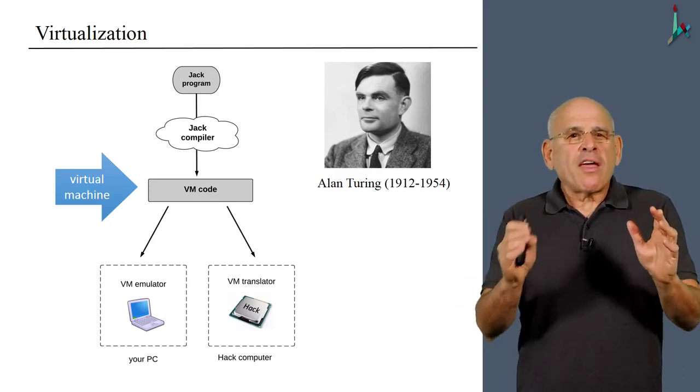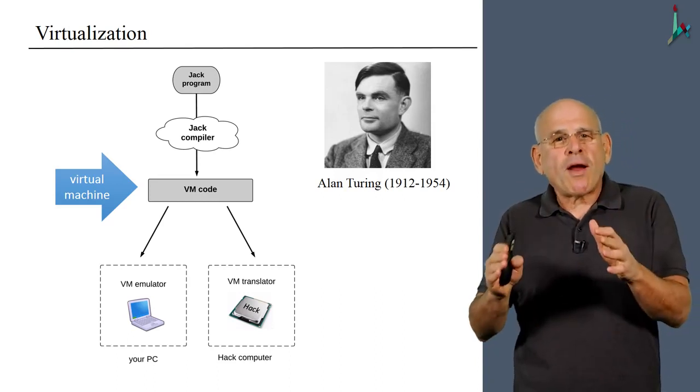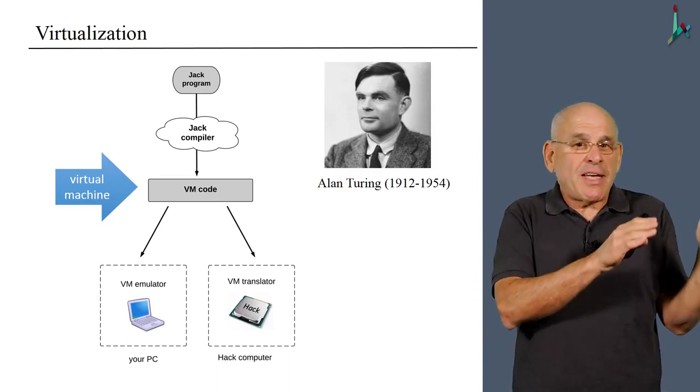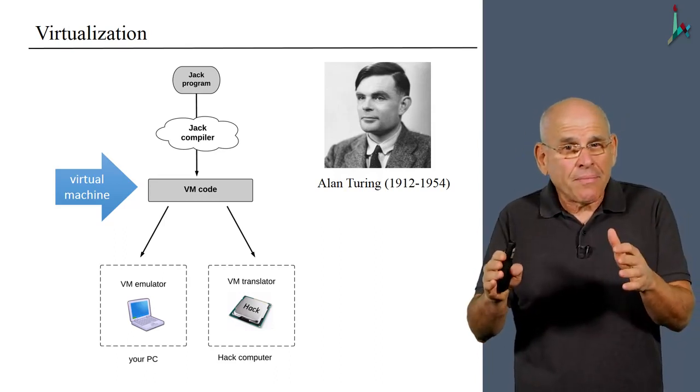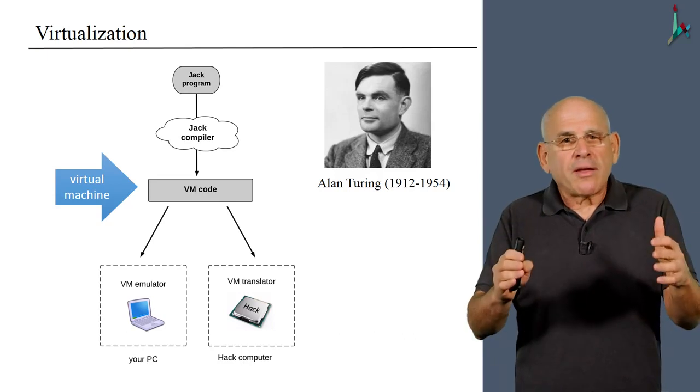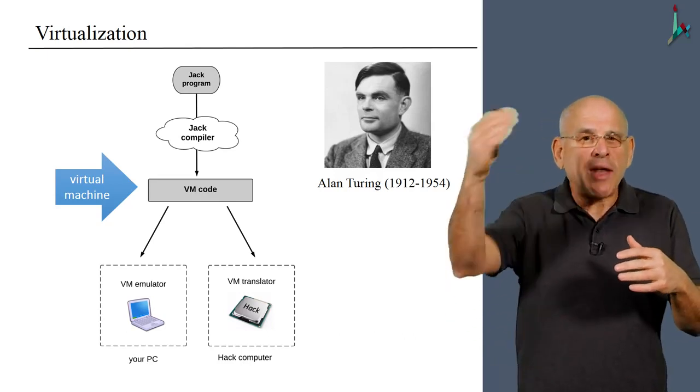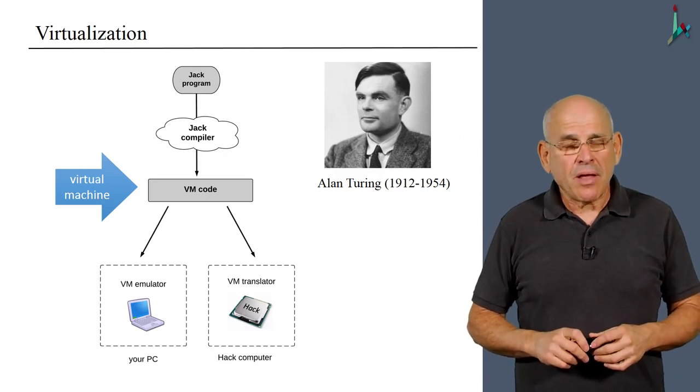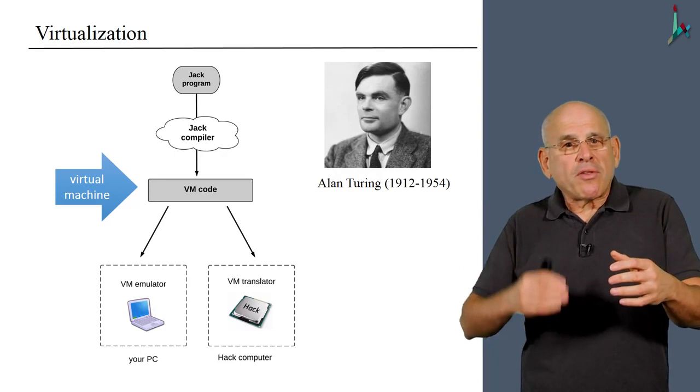By doing this, by thinking about a machine that executes another machine, or a program that executes and understands another program, a program that treats another program as data. By doing this, Turing really put computer science on a completely new level of sophistication. Because you see, this notion of thinking about thinking, this is a hallmark of intelligence in general.